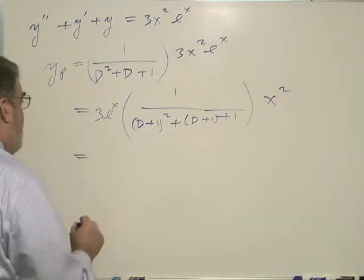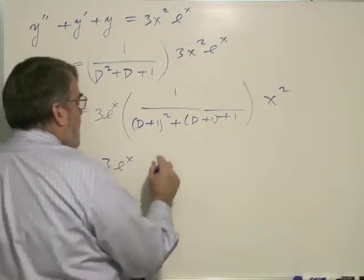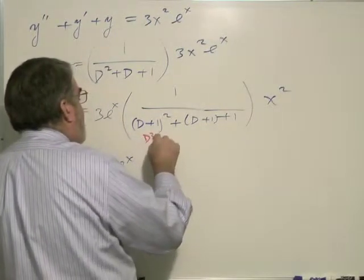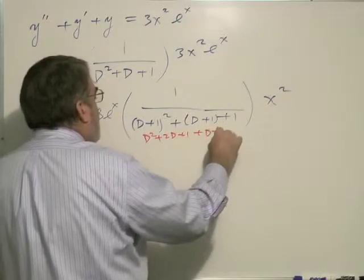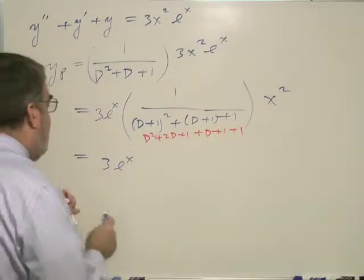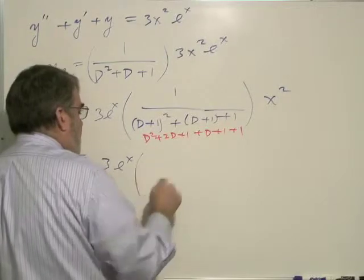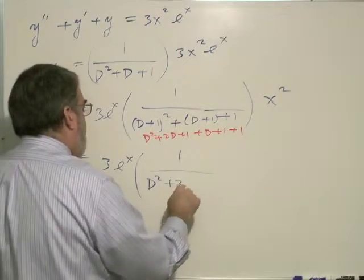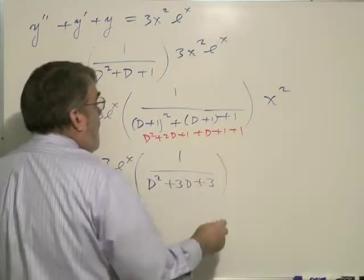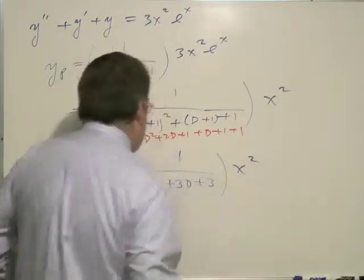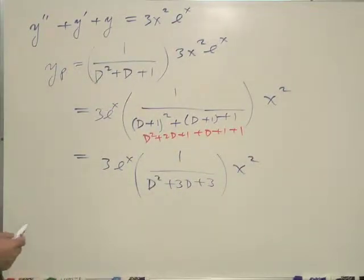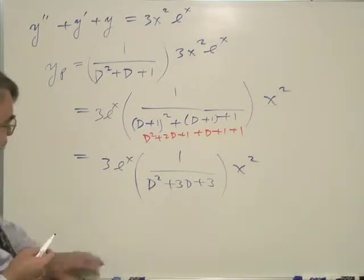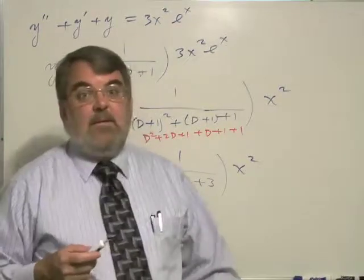So we have 3 e to the x, and in the denominator we get D squared plus 2D plus 1 plus D plus 1 plus 1, which simplifies to 1 over D squared plus 3D plus 3, operating on x squared.